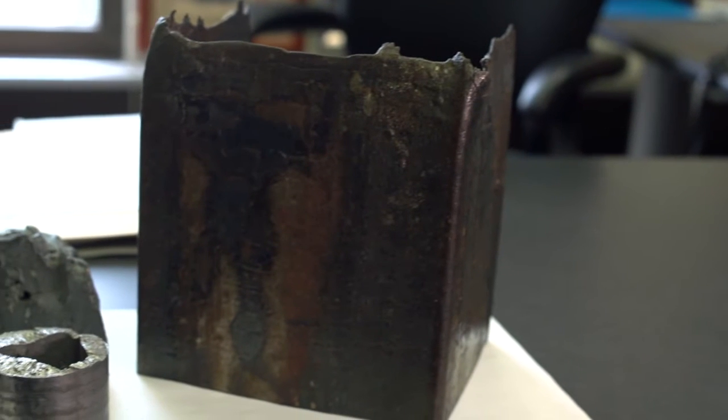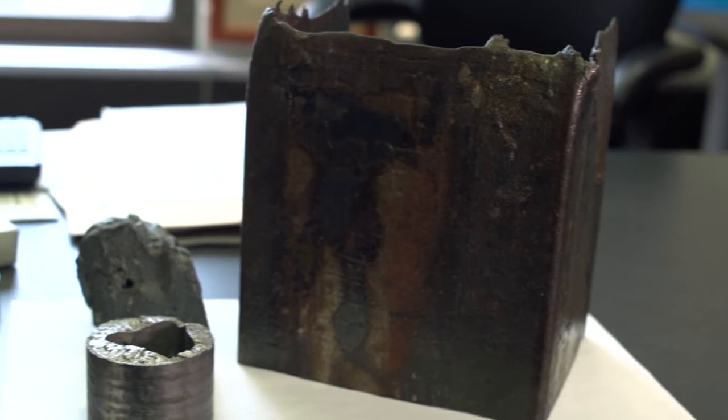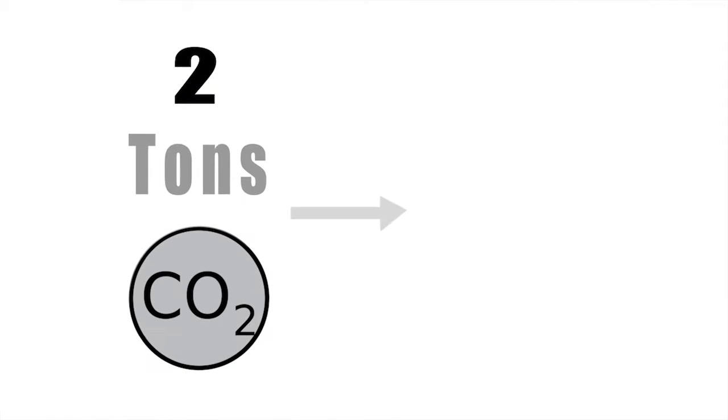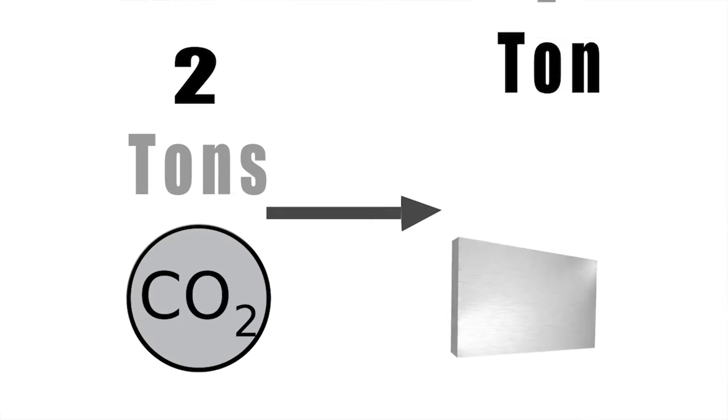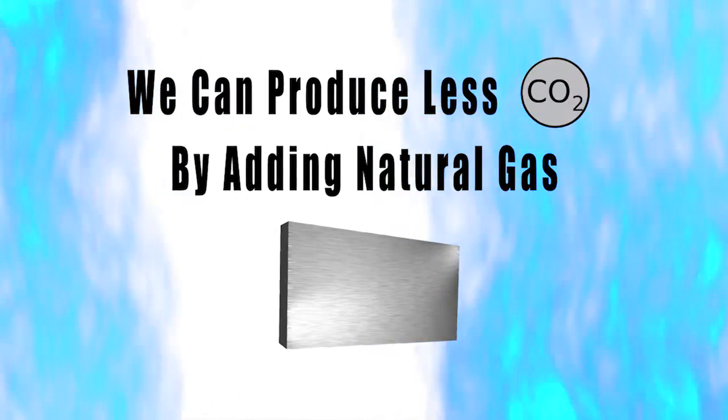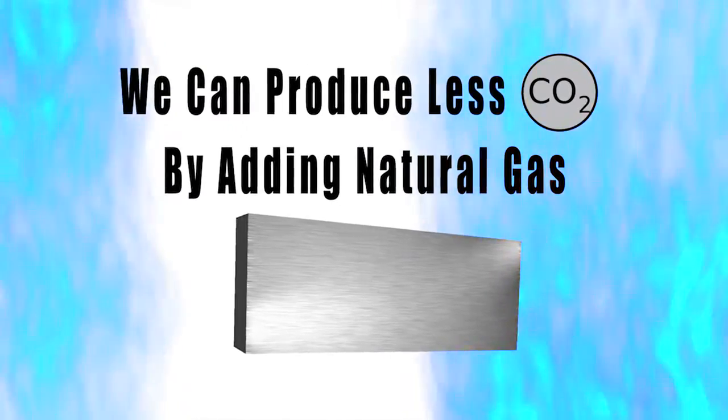My research deals with metals production, iron making and steel making. We produce a lot of CO2 when we make iron - it comes out to about two tons of CO2 to make one ton of iron. We think we can do better than that by adding natural gas into the process.